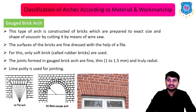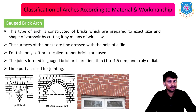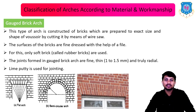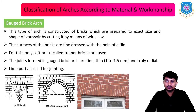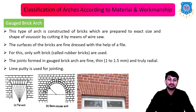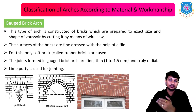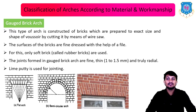Next is the gauged brick arch. This is constructed of bricks prepared to exact size and shape of voussoir by cutting with a wire saw. The surface of bricks are finely dressed with a file; only soft bricks called rubber bricks are used. Joints are very thin — 1 to 1.5 mm thickness — and truly radial. Lime putty is used for jointing. There are two types: flat gauged brick arch and semi-circular gauged brick arch.